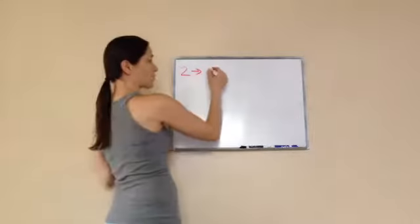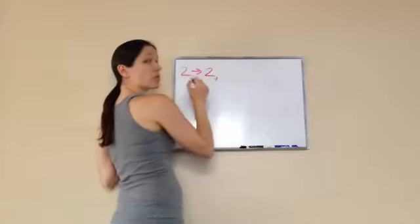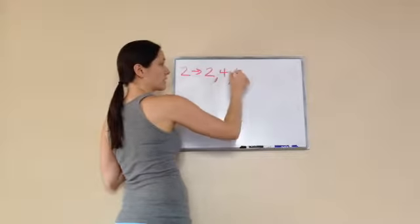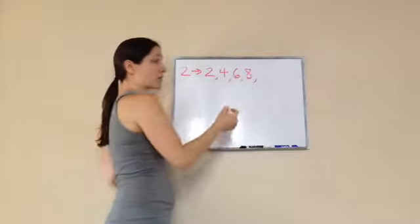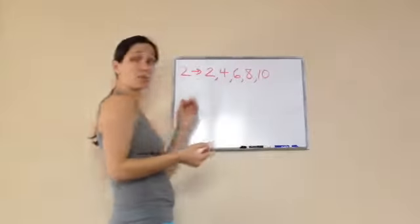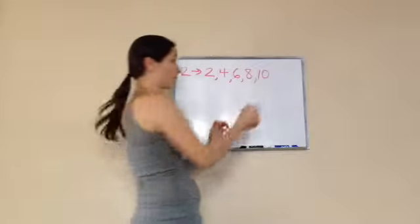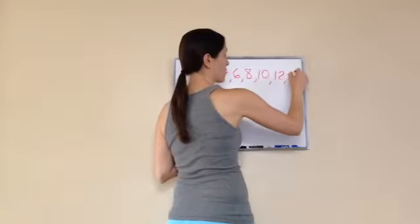So 2 times 1 is 2, 2 times 2 is 4, 2 times 3 is 6, 2 times 4 is 8, 2 times 5 is 10. I'm going up 2 times every time: 12, 14, and so on, keeps going on and on.